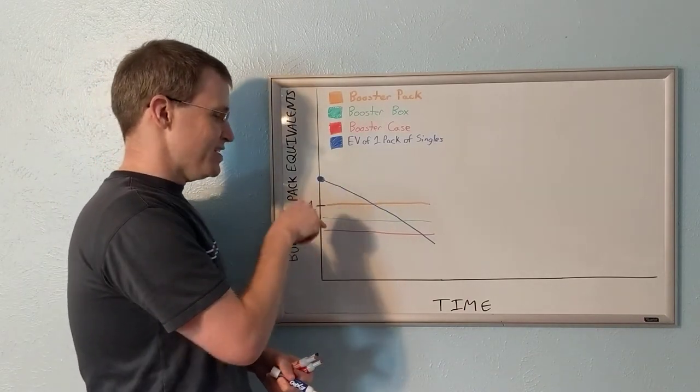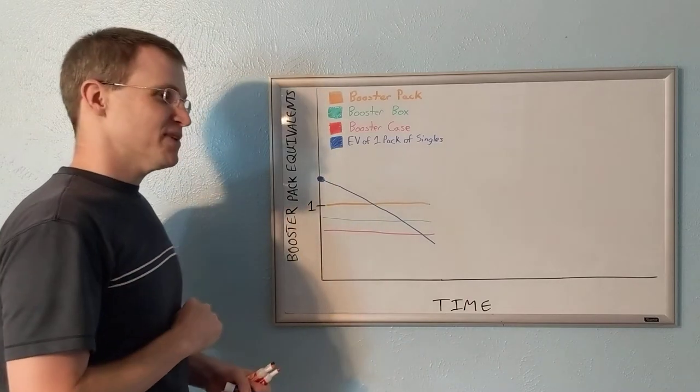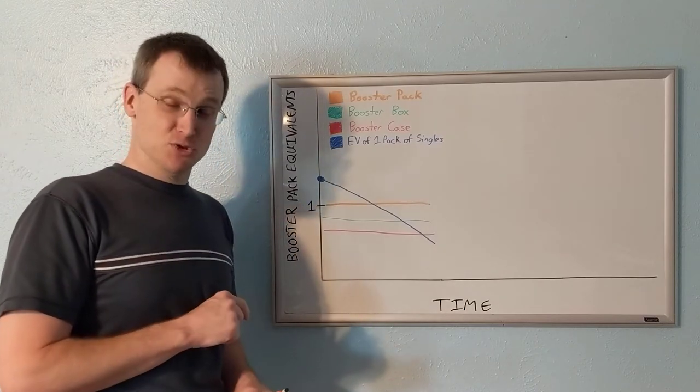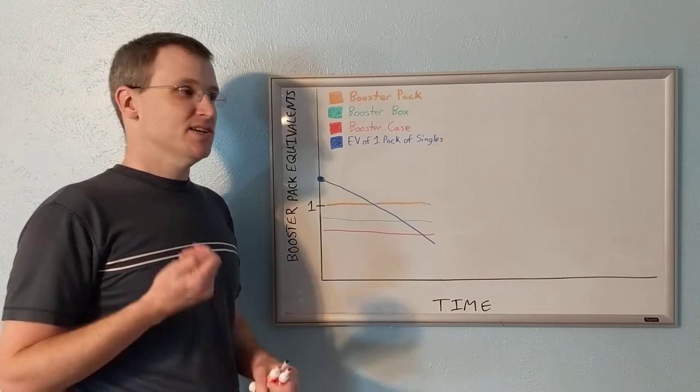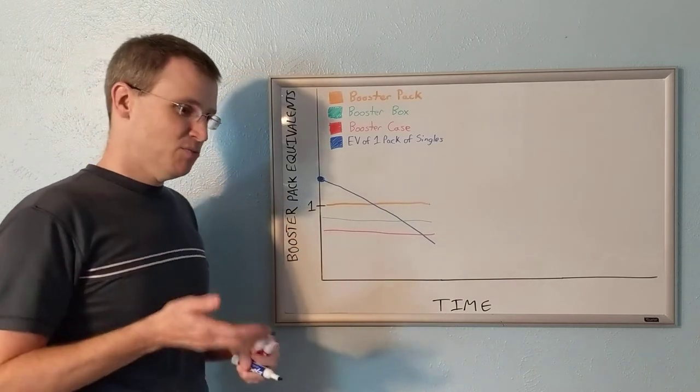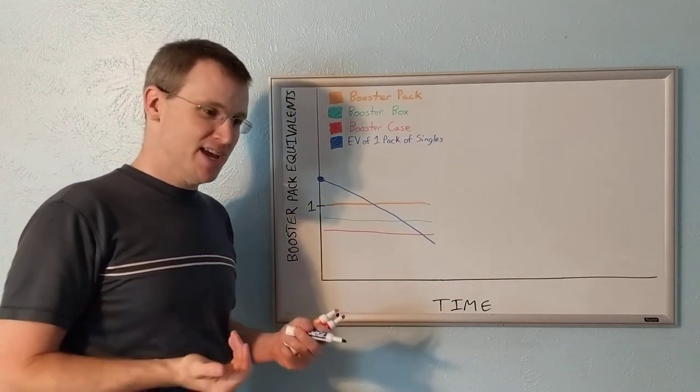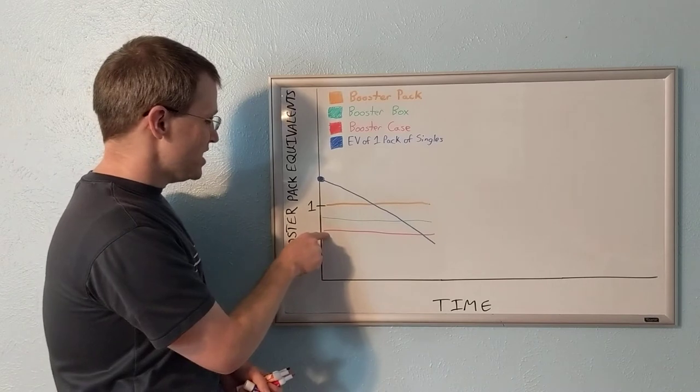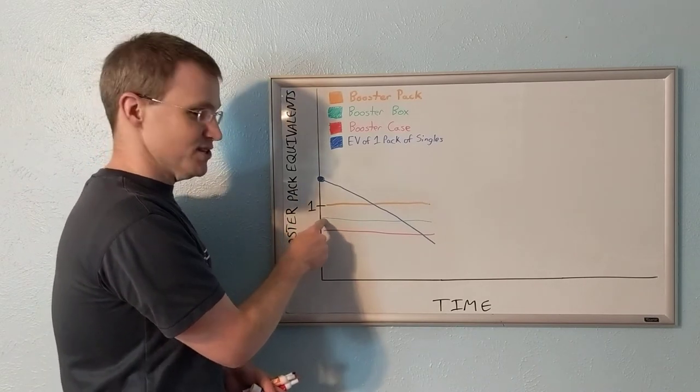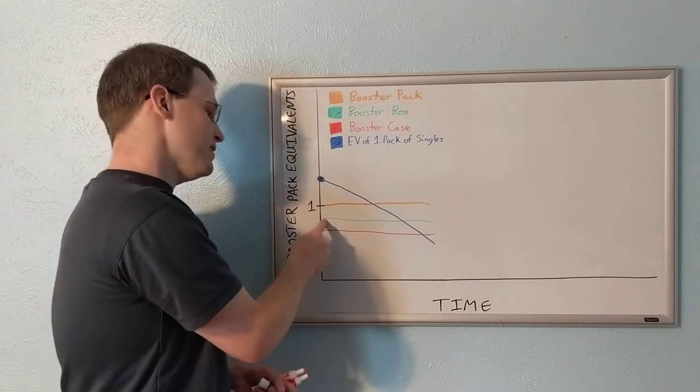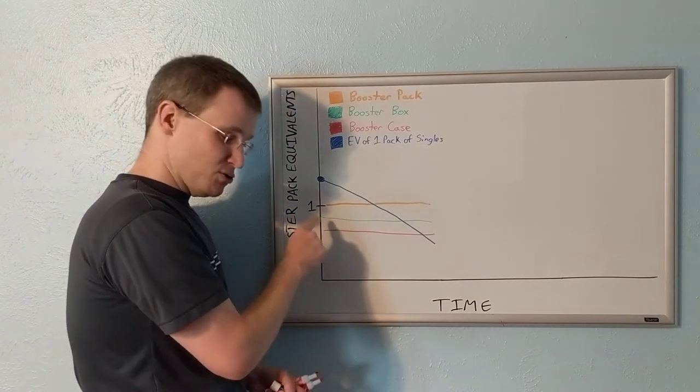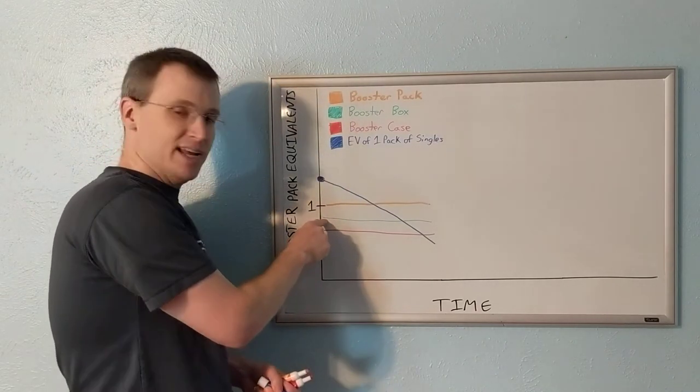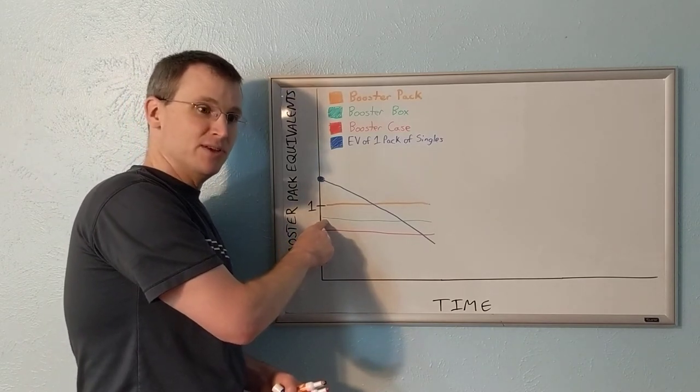Pretty soon, you're going to start destroying value by opening sealed product. You can think of this as if I take the difference in any two lines here, the distance between those lines, the vector between them, is the amount of value created or destroyed by opening that thing. Because remember, we can always take sealed product and break it down into the next lower level, but we can't ever take anything that's open and seal it back up. Not honestly. So if you take a case and you break it into booster boxes, six in the case of Magic or four in the case of Flesh and Blood, you will capture a little bit of value by doing that because you bought it with a better economy of scale at the case level, and then you're selling it at a lesser economy of scale at the booster box level.